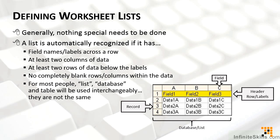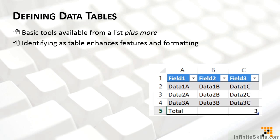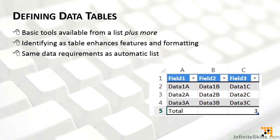For most people, list, database, and table are used interchangeably, but technically they are not the same thing. Excel recognizes a list and does a few things automatically, but a table requires specific configuration. Data tables include all the basic tools available from a list, plus many more. Formally identifying something as a table enhances features and formatting. It has the same data requirements: labels across a row as a header row, at least two fields, followed by at least two records, with no completely empty rows or columns.